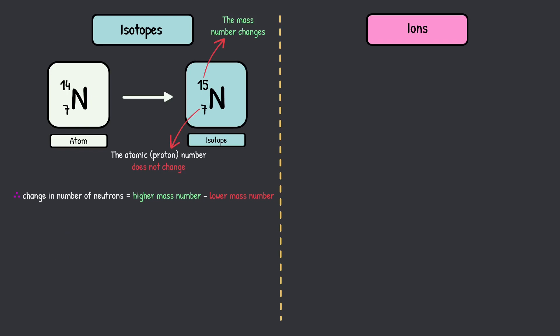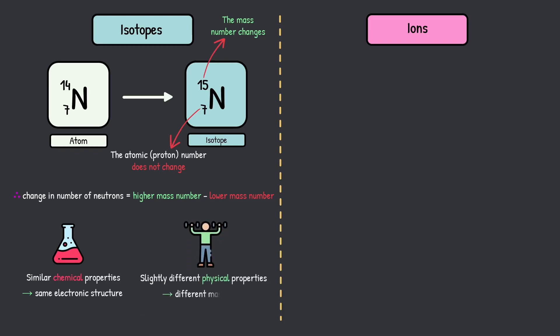So next we need to look at properties. Isotopes have similar chemical properties. Why? Because they have the same electronic structure — the same number of electrons. Remember, with isotopes the number of electrons does not change; that's for ions. The second property is that they have slightly different physical properties. Why? Because they have different masses in the nucleus. Neutrons have a mass of one, so if you add or take away a neutron you get a different mass, leading to different physical properties.